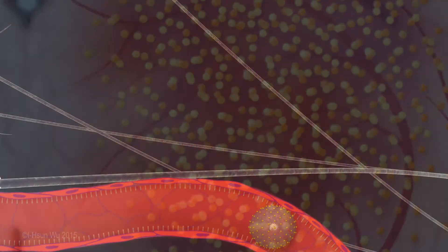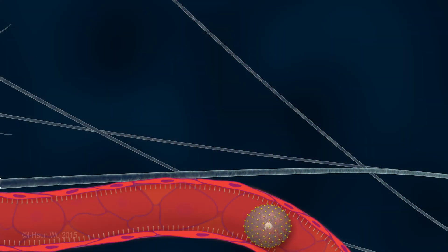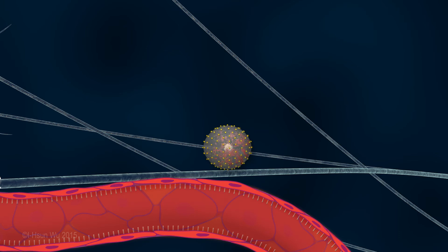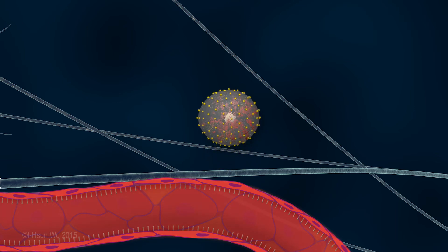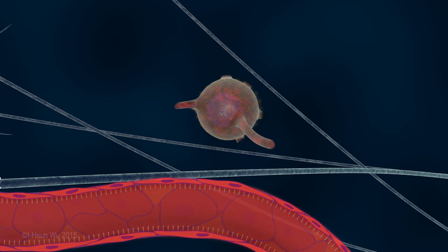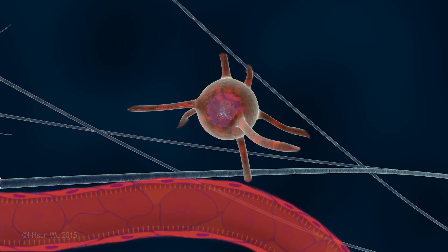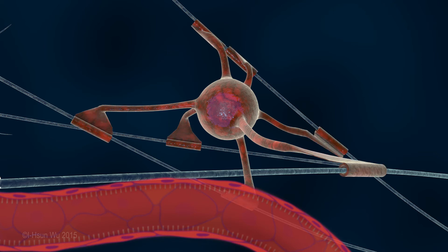The engineered glial-restricted progenitors then go through the blood vessel wall via opened tight junctions and integrate with neural tissue, forming new myelin-producing oligodendrocytes.